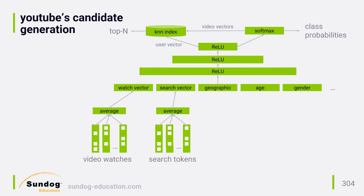At the next layer, they combine together those averaged video watch vectors and search token vectors with any other training features they want to incorporate into their model, such as the user's geographic location, their age, their gender, and presumably other features not shown here. All of those concatenated features are then fed as input into a deep neural network trained with Softmax. They settled on three layers: the first has a width of 1024 units, followed by 512, and then 256 at the top. This gave them a good balance of accuracy while staying within their budget for computing hardware.